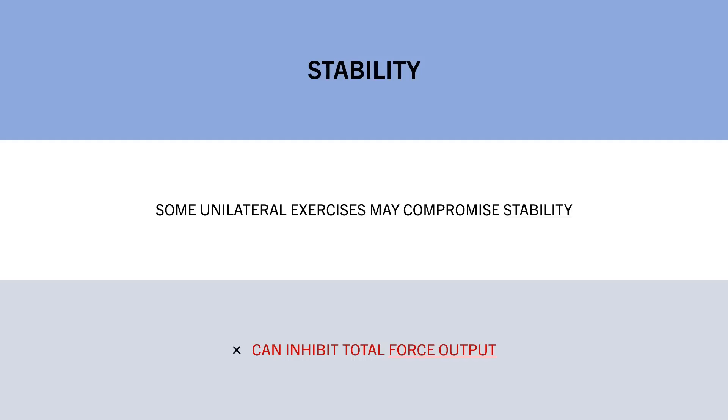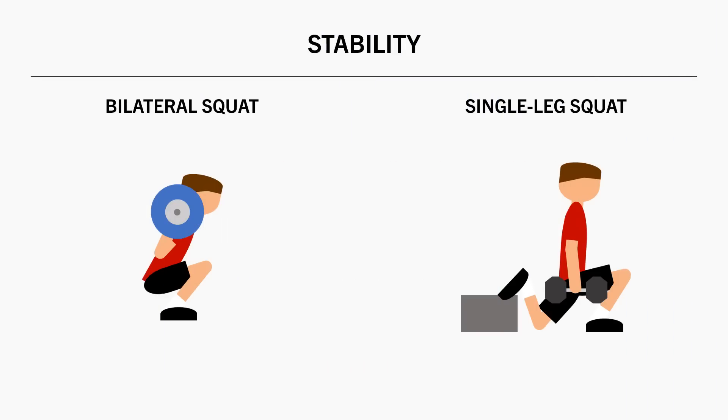For example any form of split squat variation using free weights is probably going to be less stable compared with a bilateral squat variation. This may result in lower force output and a poorer hypertrophic stimulus for the quads and glutes, although you could get around this by holding onto the rack, using a smith machine or finding another way to increase stability.